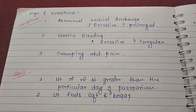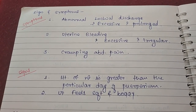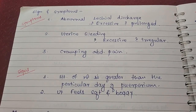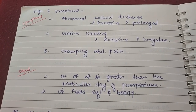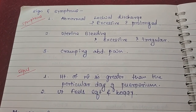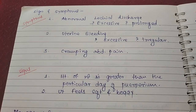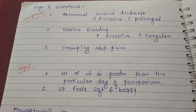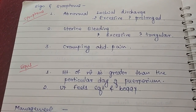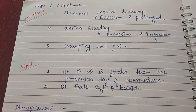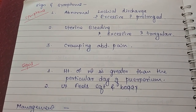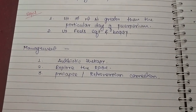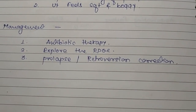Signs and symptoms of subinvolution include abnormal lochia — excessive or prolonged — uterine bleeding that is excessive or irregular, and cramping abdominal pain. On examination, the uterine height is greater than expected for the particular day of the puerperium, and the uterus feels soft and boggy. Management requires antibiotic therapy.